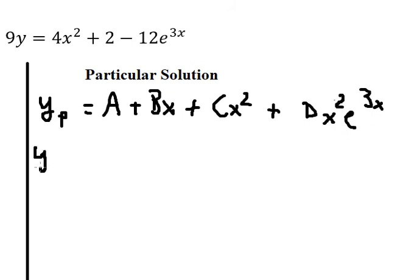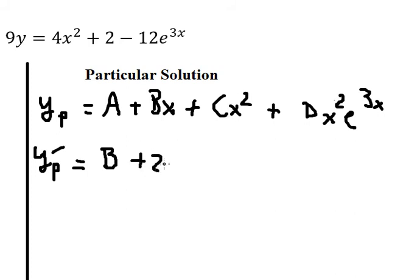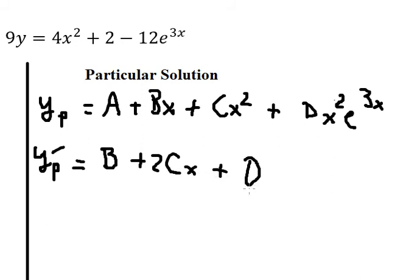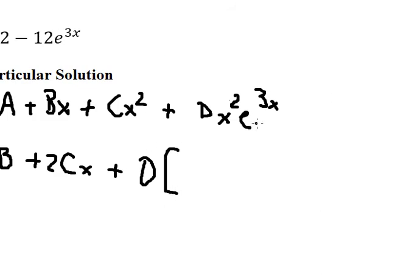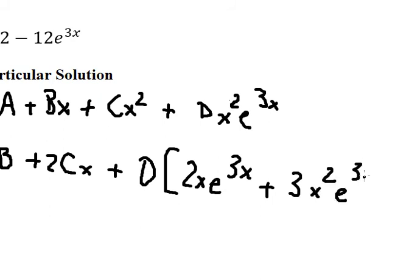Now we compute the first derivative of yp. The constant A gives 0. For Bx we get B. For Cx² we get 2Cx. For D·x²·e^(3x) we apply the product rule: differentiate x² to get 2x times e^(3x), plus x² times 3e^(3x).